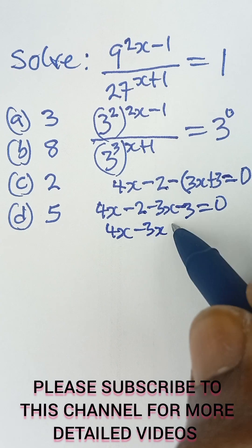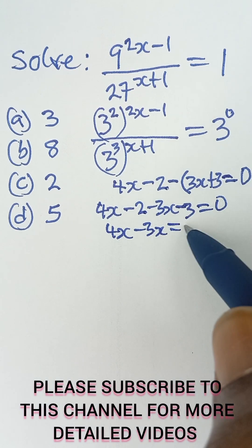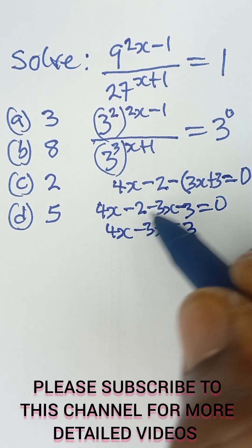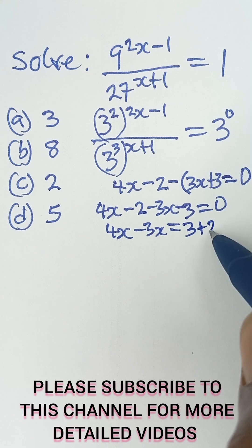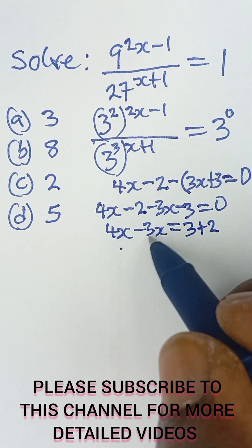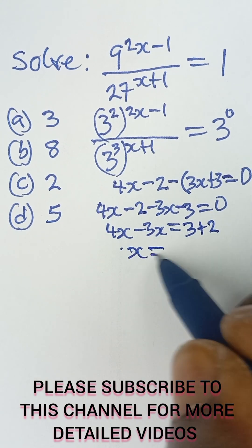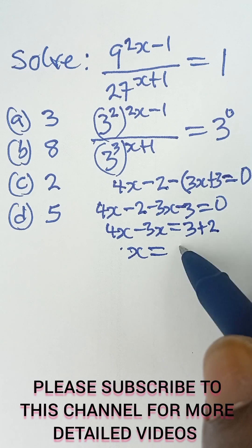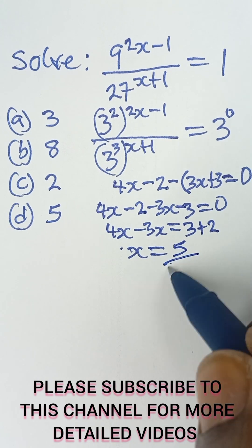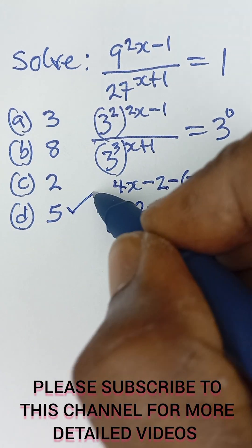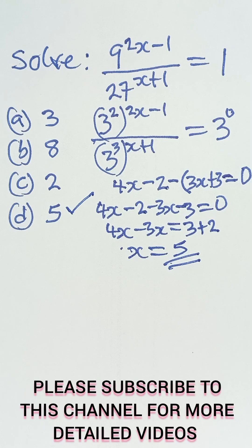minus 3x will be equal to, when this negative 3 goes there it becomes positive 3, negative 2 becomes plus 2. So I have 4x minus this will give me x, and that will be equal to x, and 3 plus 2 which is 5. So the answer is 5, which is option d. Please subscribe to this channel for more videos like this. Thank you.